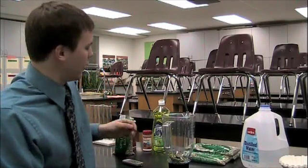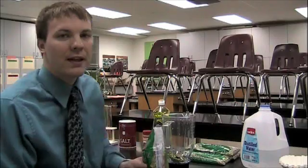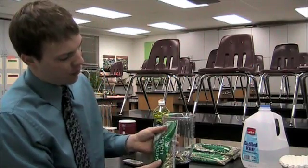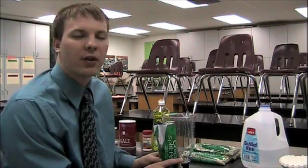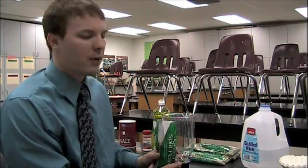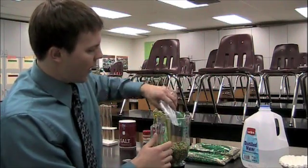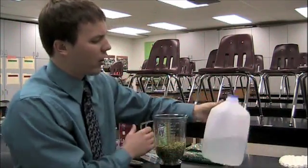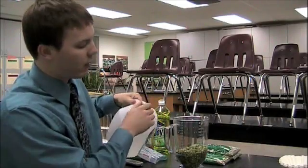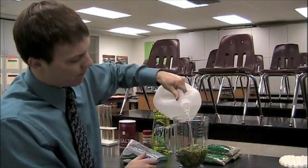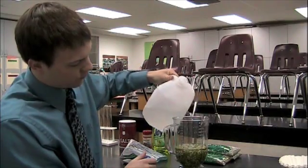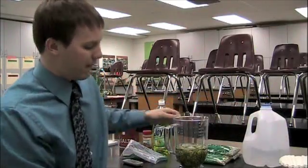Approximately half an hour to an hour before class, you'll need to soak your peas to soften them. I'm going to be using one pound of split green peas for a class of approximately 25 students. Pour that into my blender and add distilled water so that the water is just about covering the peas. I'll let that sit for about a half an hour before I blend it.